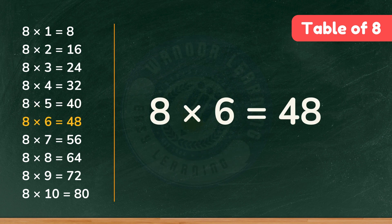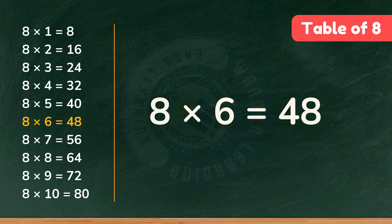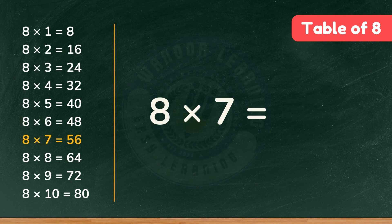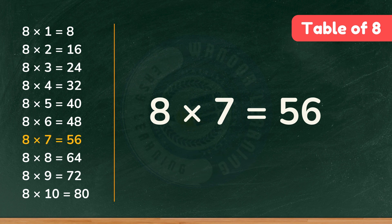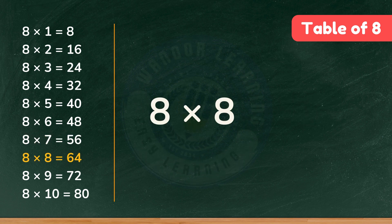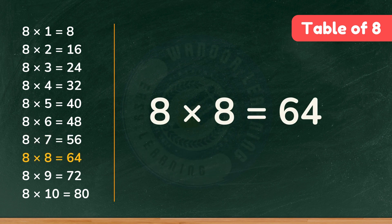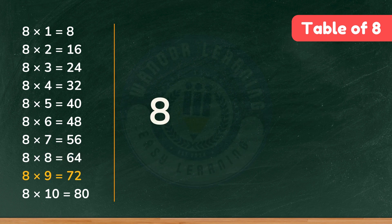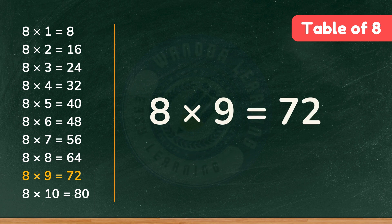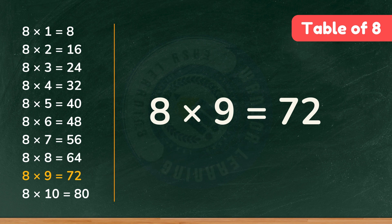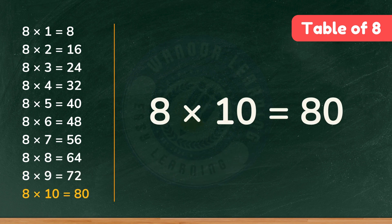Eight times six is forty-eight. Eight times seven is fifty-six. Eight times seven is fifty-six. Eight times eight is sixty-four. Eight times eight is sixty-four. Eight times nine is seventy-two. Eight times nine is seventy-two. Eight times ten is eighty. Eight times ten is eighty.